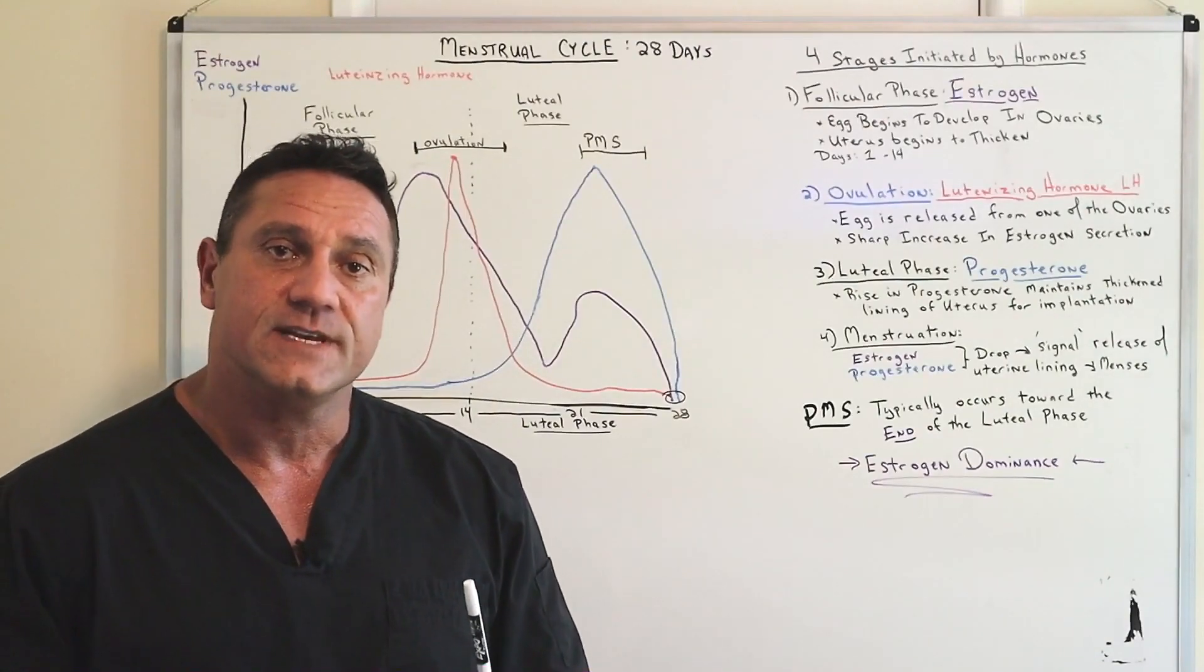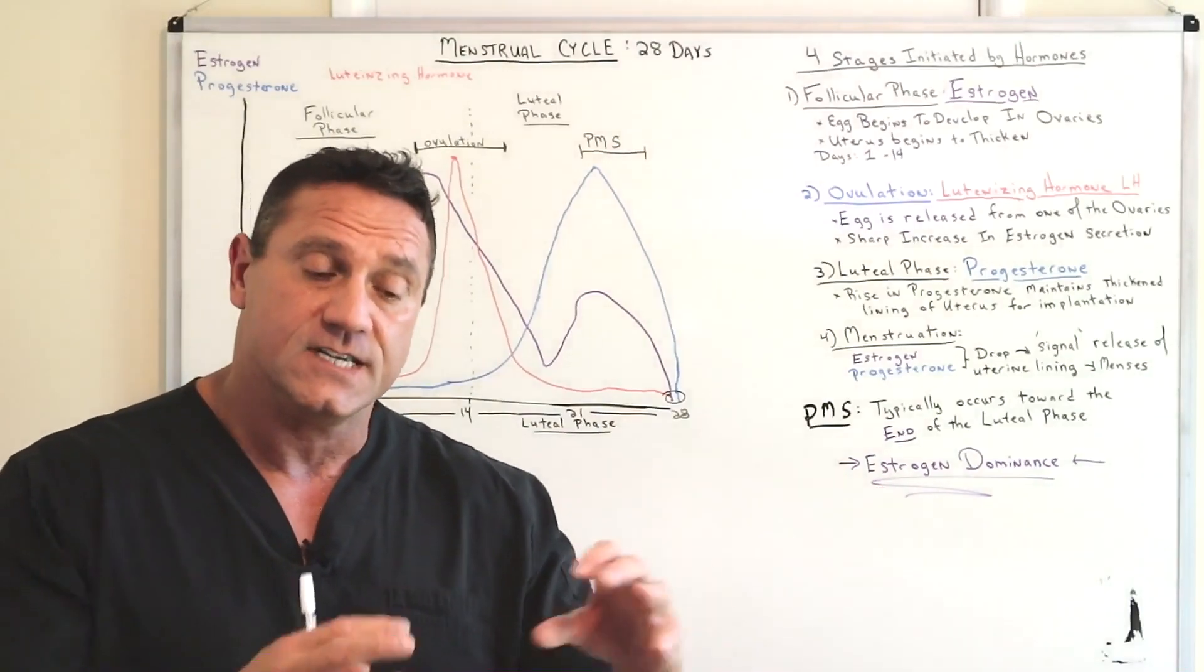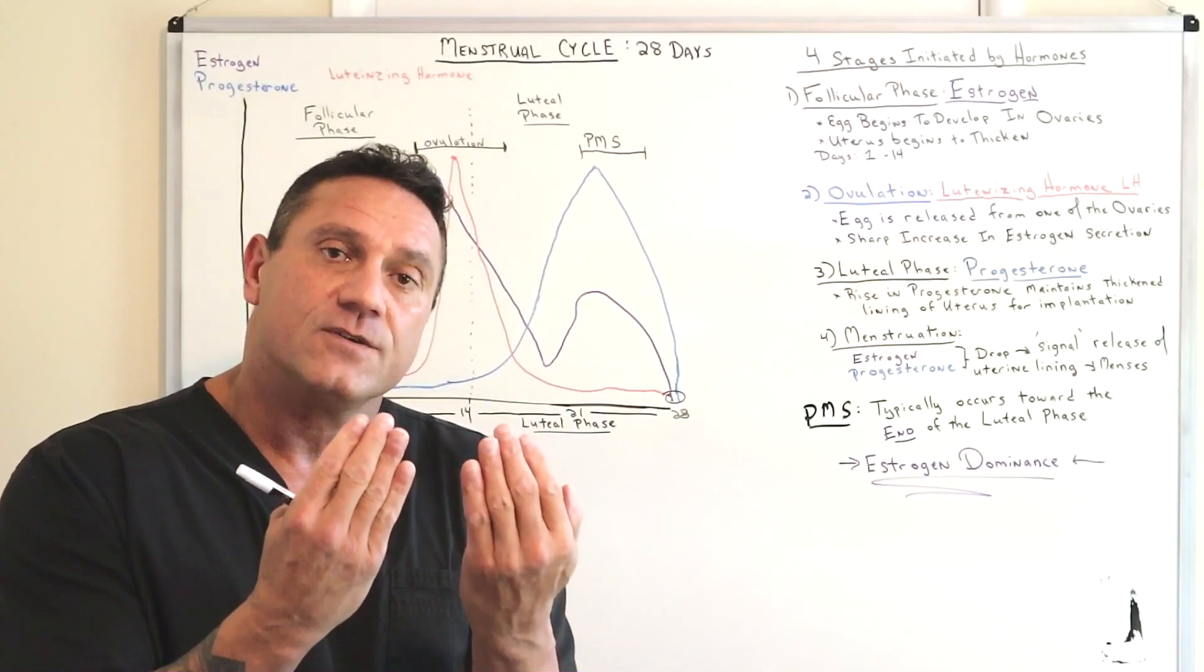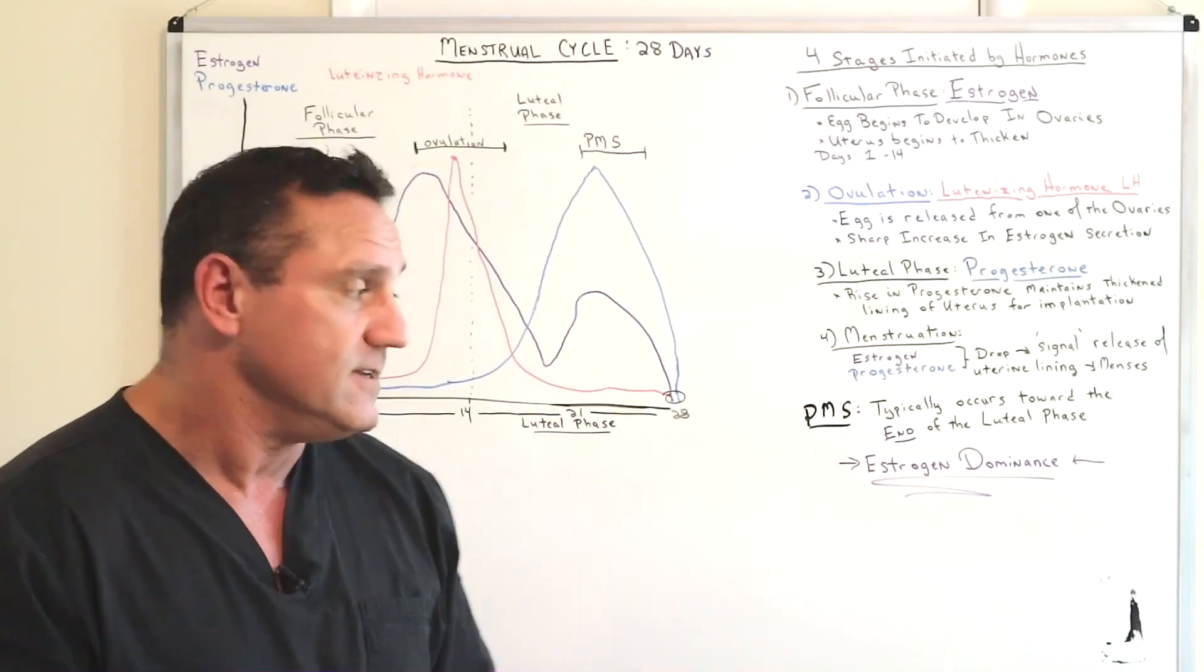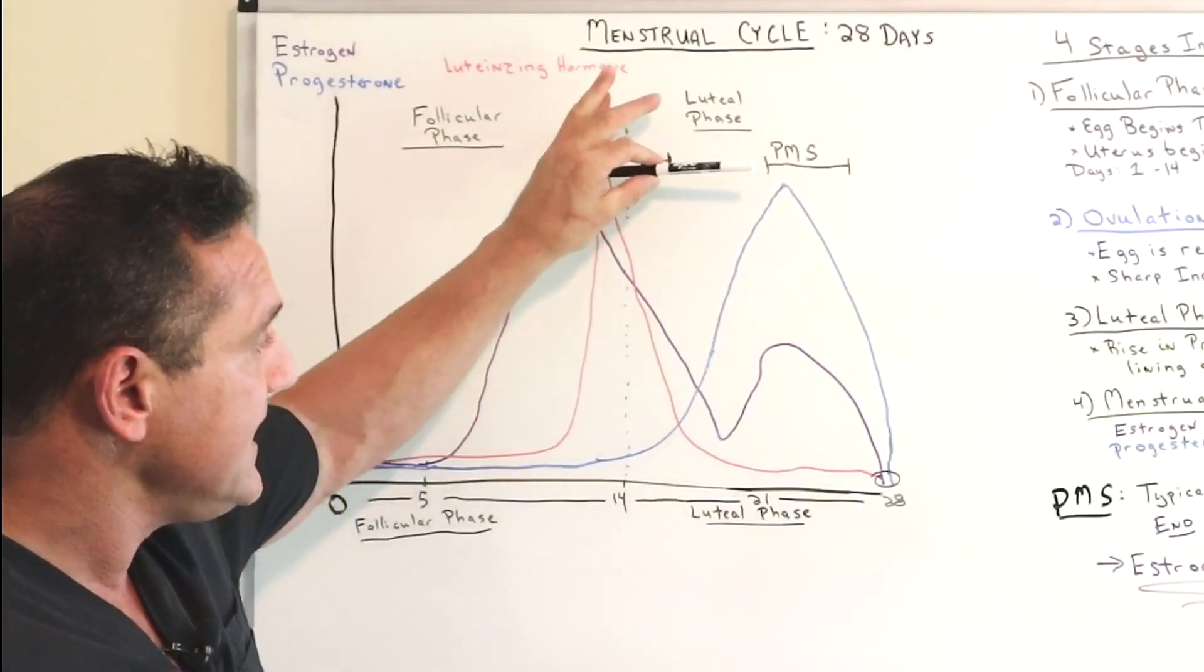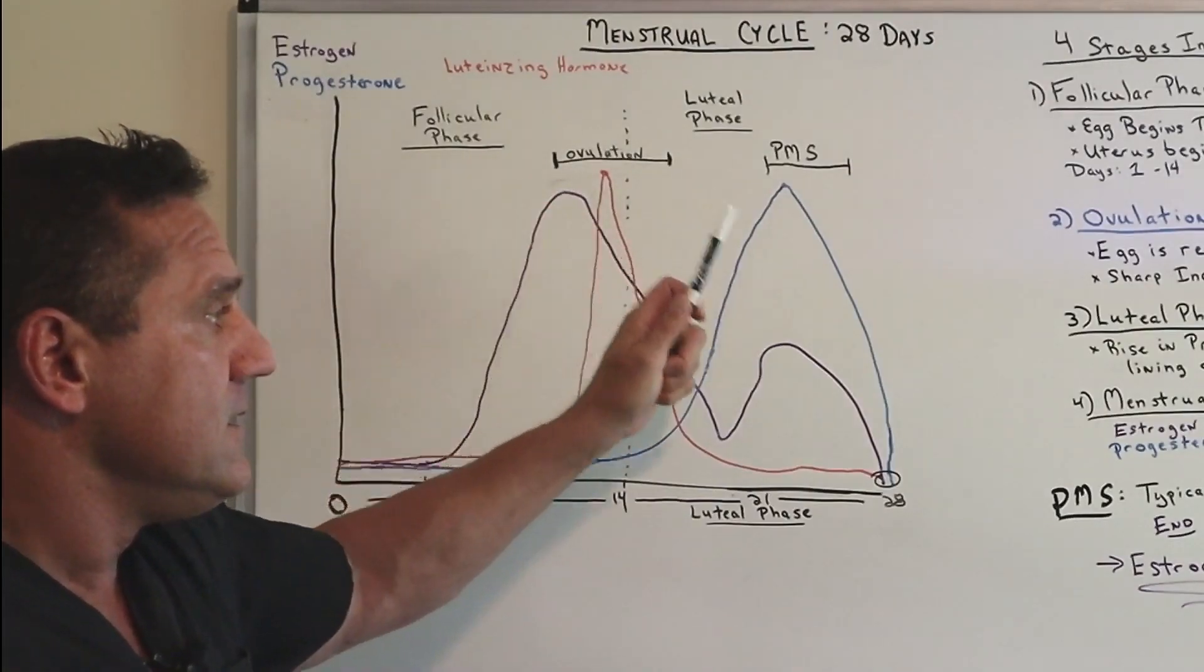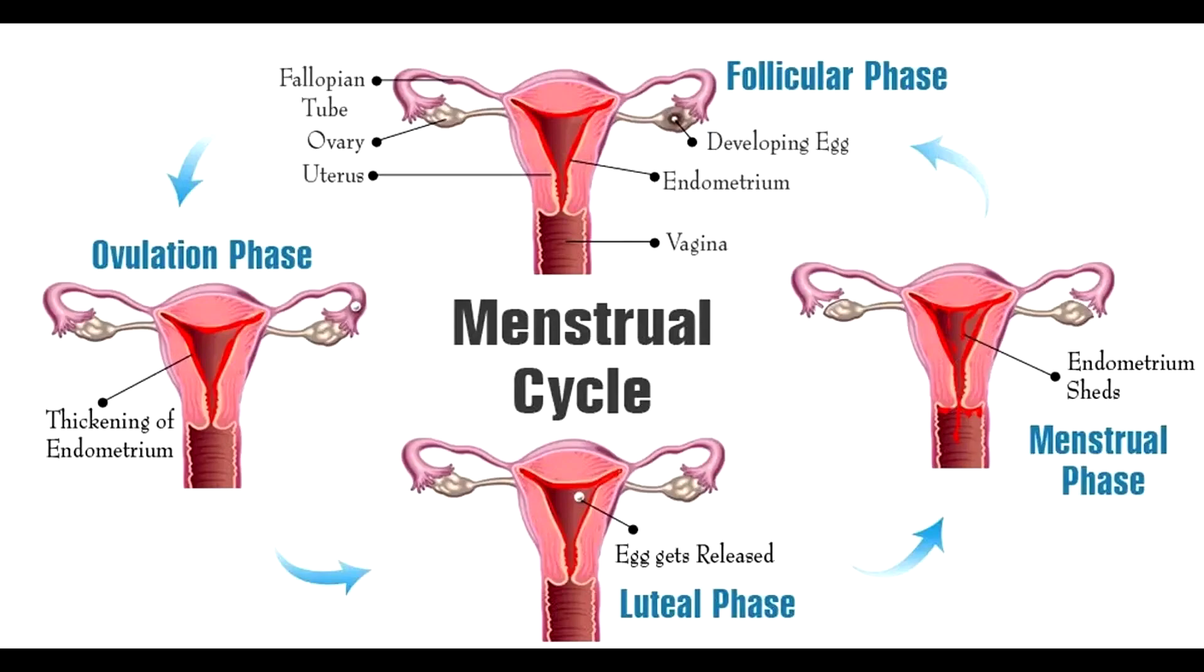So then you got the rise of progesterone, which the function of progesterone is to mature the lining. So the function of estrogen is cell replication. The function of progesterone, progestation, is to make the uterine lining more thickened and more mature for implantation. So you got the skyrocket surge of progesterone in the second half of the cycle and a dip in estrogen. And you still get a little bit of peaks and valleys here with estrogen as well. So that's luteal phase. It maintains the uterine lining for implantation.